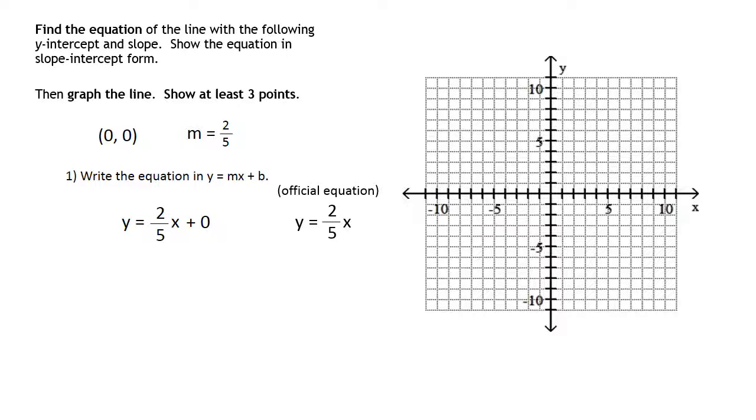Now officially, this line is going to be written y = (2/5)x because you don't need the 0. But when you are new to this, it's helpful to have that 0 there because it means something. It's telling you something about the line. So officially, you would enter y = (2/5)x, but let's look at how we can graph this line with the information that we have.